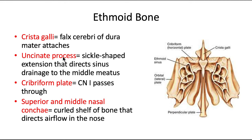The uncinate process is a sickle-shaped extension that directs sinus drainage to the middle meatus. The cribriform plate, or horizontal plate, is where cranial nerve one — the olfactory nerve — passes through, which makes sense given its location near the nose.